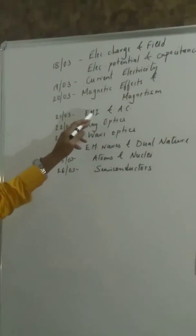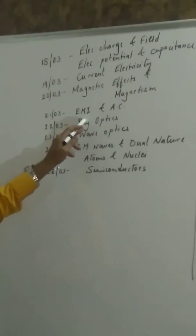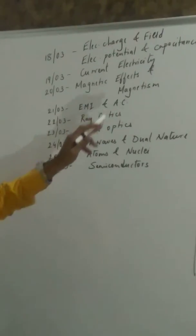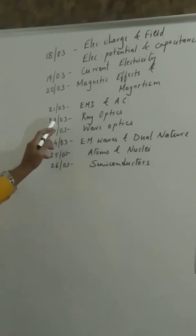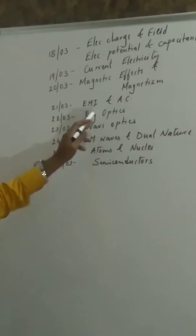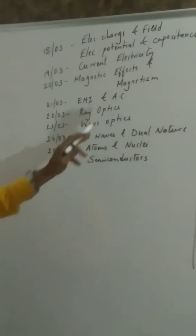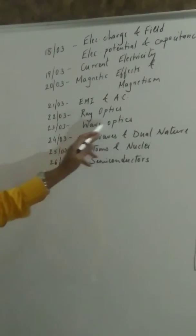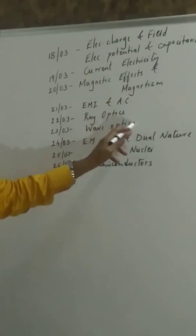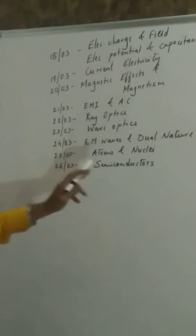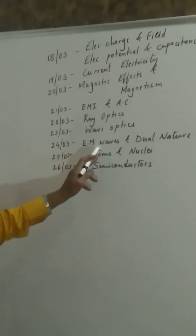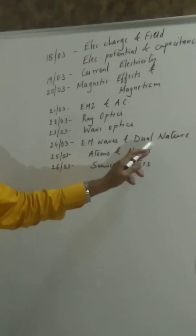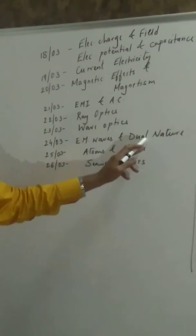On 21st March, we will cover EMI, electromagnetic induction and alternating current, chapters 6 and 7. 22nd will be for ray optics, 23rd for wave optics, chapters 9 and 10. On 24th March, it is EM waves, chapter 8, and dual nature, that's chapter 11.